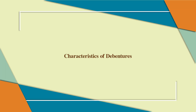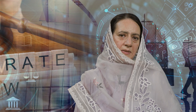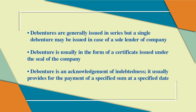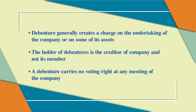Debentures have certain specific characteristics. First, debentures are generally issued in a series but a single debenture may be issued in case of a sole lender. Second, a debenture is usually in the form of a certificate issued under the seal of the company. Third, it is an acknowledgement of indebtedness providing for payment of a specified sum at a specified date. Fourth, it generally creates a charge on the company's assets, though this is not essential. The holder of debentures is a creditor of the company, not a member, and a debenture carries no voting rights.